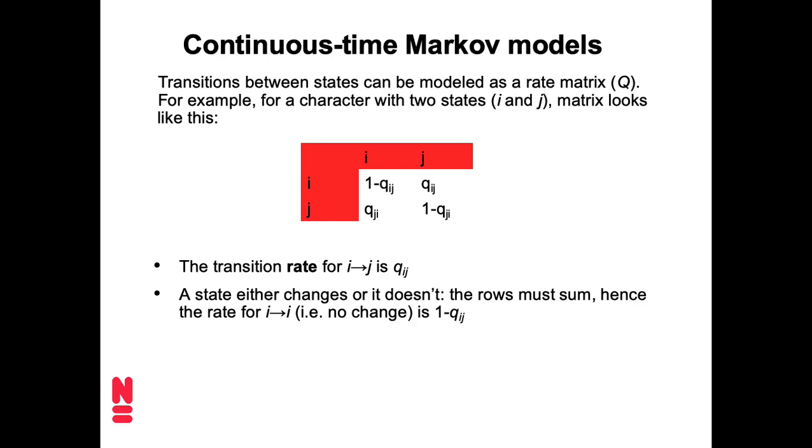Now, as these transitions, they either happen or they don't. So every row must sum to one. Right? It either happens or it doesn't. So in total, that's like a probability of one. So for the other cells, we can just do one minus. And of course, as the matrix gets more complicated, as we add more states, then we might do this a little bit differently. But they still have to sum to one. And we'll see an example of that later on.